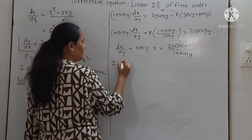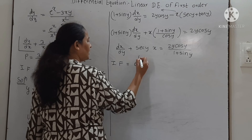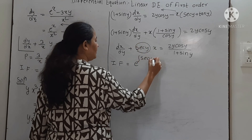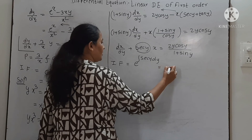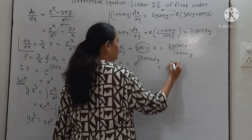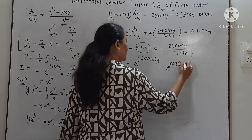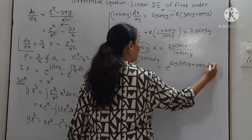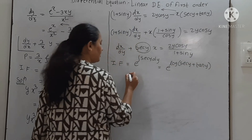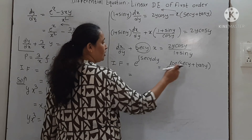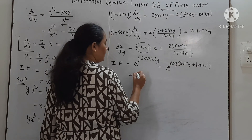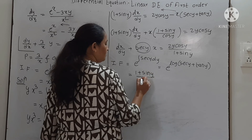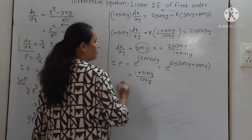The integrating factor is e^(∫sec y dy). The integral of sec y is log(sec y + tan y). By the rules of logarithm, the exponential and logarithm cancel to give sec y + tan y, which in terms of sin and cos is (1 + sin y)/cos y.